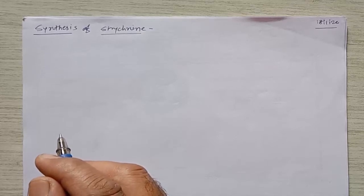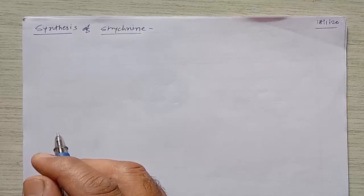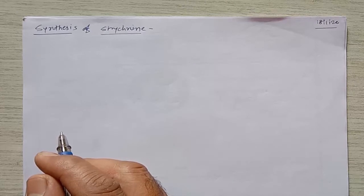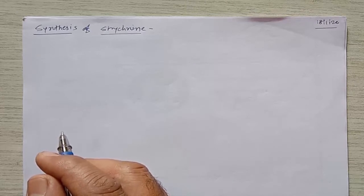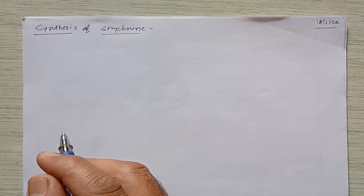Hello everyone, welcome once again to the online lectures. We are talking about retrosynthesis as well as synthesis of natural products, and we are discussing the retrosynthesis of strychnine. In the last lecture we discussed the retrosynthesis of strychnine, which gives 22 to 24 different products in the retrosynthesis.